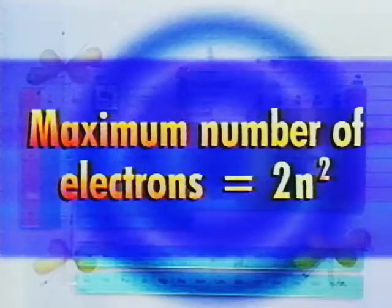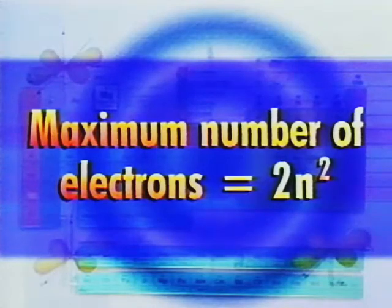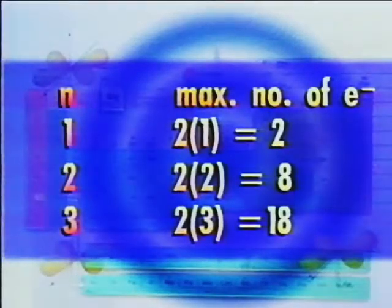The maximum number of electrons that can fill each orbit is 2n squared. Thus, the first orbit can have 2 electrons at most, the second can have 8, and so on.